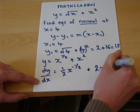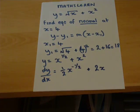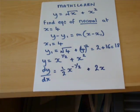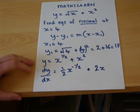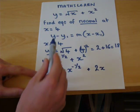That is the equation or the gradient function which we use to find the gradient at a particular point. Now, we want that when x equals 4.